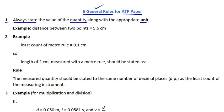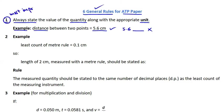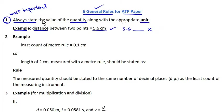The first rule says: always state the value of a quantity along with the appropriate unit. For example, the distance between two points should be stated as 5.6 centimeters, not as just 5.6 with no unit. This is perhaps the easiest and also the most important rule, because you can lose about two or three marks in your ATP paper if you don't state the unit after the value.